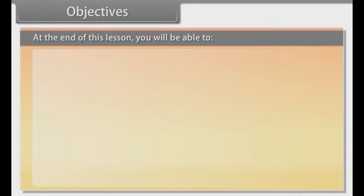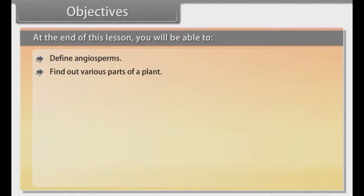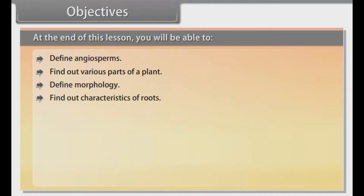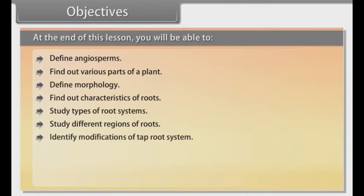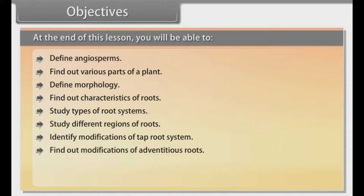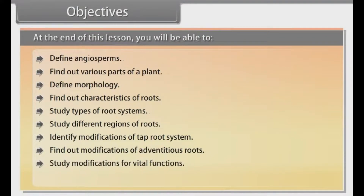At the end of this lesson you will be able to: define angiosperms, find out various parts of a plant, define morphology, find out characteristics of roots, study types of root systems, study different regions of roots, identify modifications of tap root system, find out modifications of adventitious roots, study modifications for vital functions, and understand functions of roots.